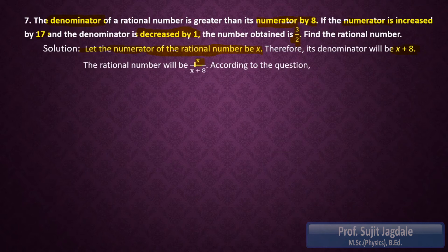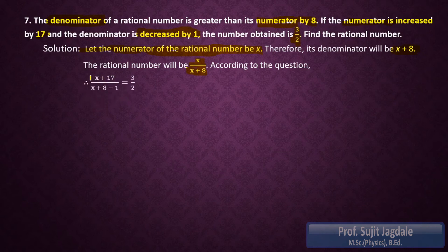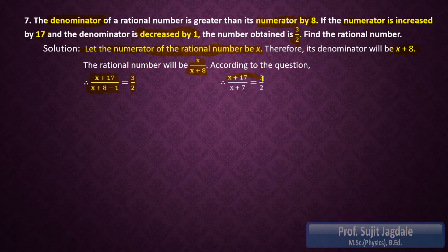So the given rational number is x upon (x + 8) in the form of numerator and denominator. According to the question, we increase the numerator by 17 and decrease the denominator by 1, and their ratio becomes 3 upon 2. Increasing means adding 17 to the numerator x, and decreasing means subtracting 1 from the denominator (x + 8), giving (x + 8 - 1) which is (x + 7). So we have (x + 17) upon (x + 7) equals 3 upon 2.